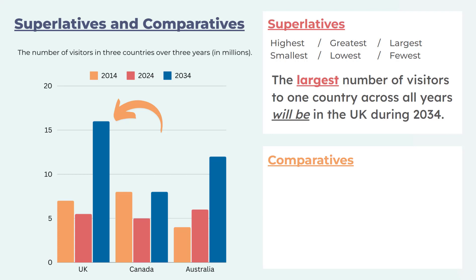The sentence reads: 'The largest number of visitors to one country across all years will be in the UK during 2034.' This is a very effective sentence — I'm describing one data point, 2034 in the UK as the largest, and making a natural comparison across all years. I'm also using the correct tense 'will be' as I'm talking about 2034.